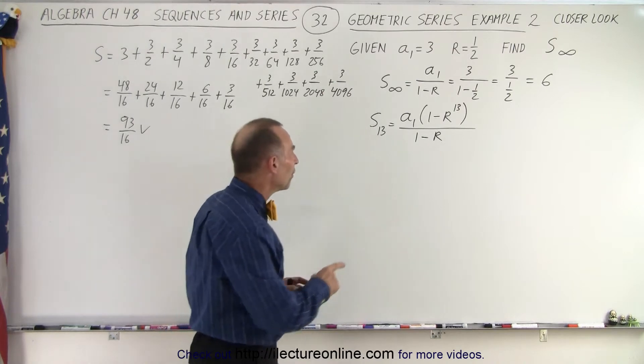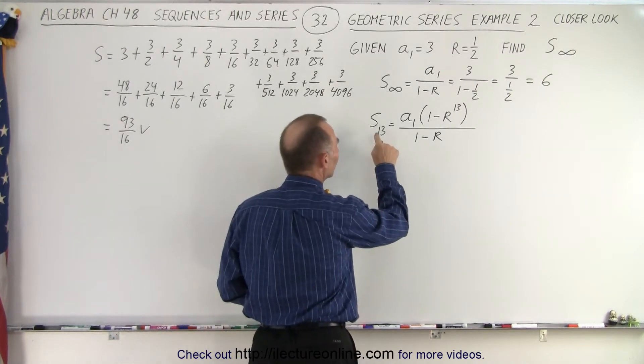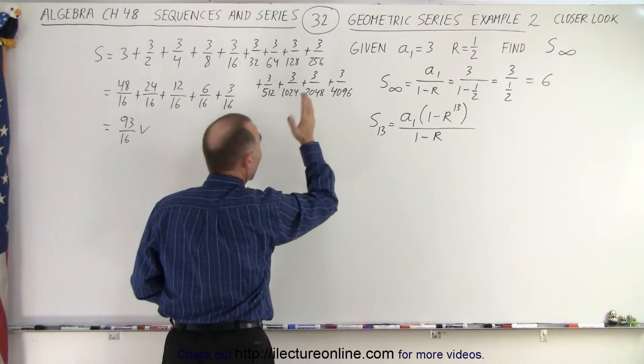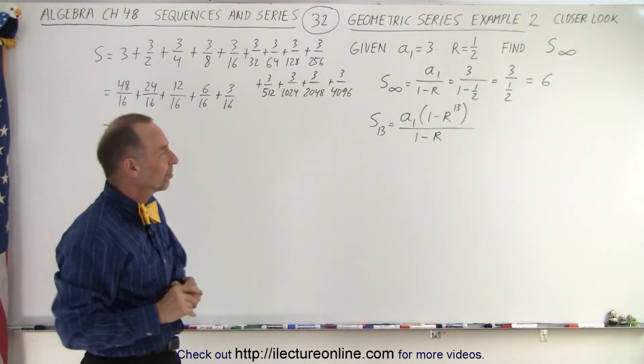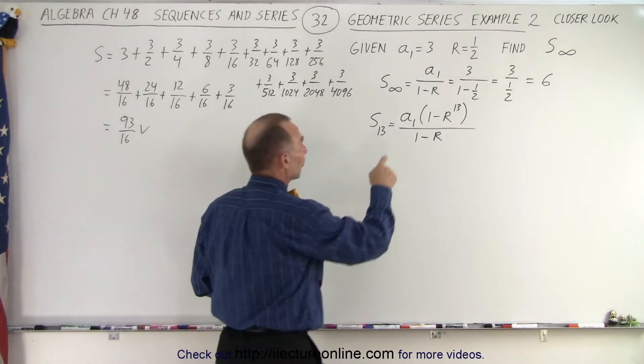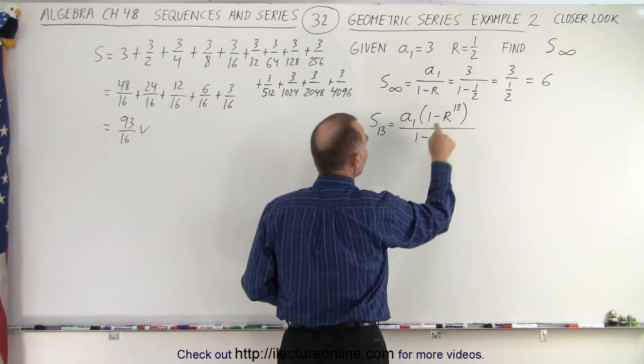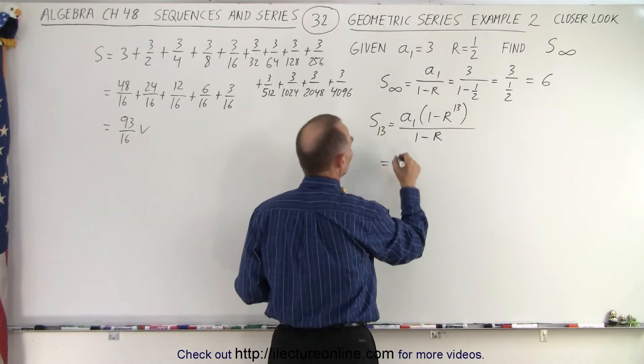But let's find the partial sum of the first 13 terms. And here I have written the first 13 terms. If we add up the first 13 terms, how close do we get to 6? Well it turns out it's the first term times 1 minus R to the N. In this case N is 13 divided by 1 minus R. So plug in the numbers.